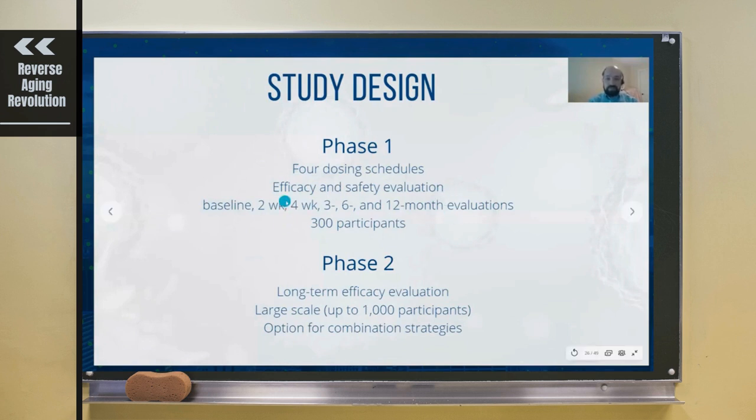Phase 1 will look at four dosing schedules with efficacy and safety evaluation. It'll include 300 participants plus 75 placebo. Phase 2 will probably remove the placebo, pick the best dose, and increase the number of participants up to a thousand or more. We may open the door depending on demand and our capacity.